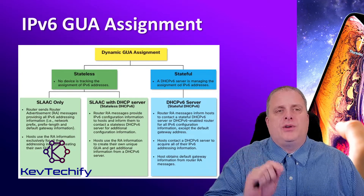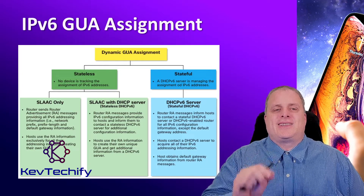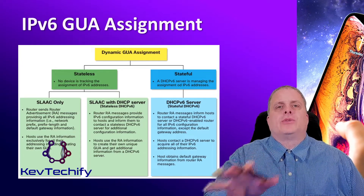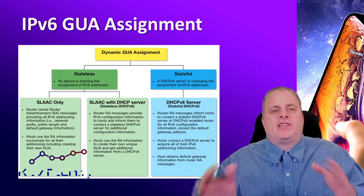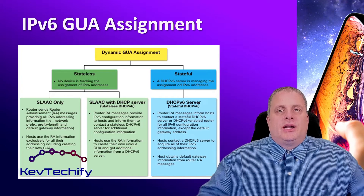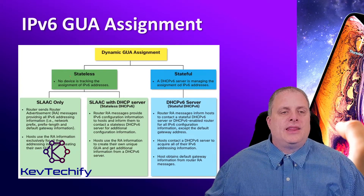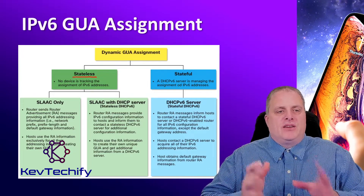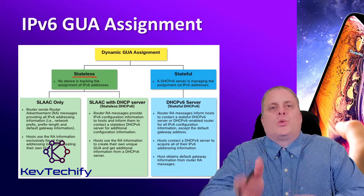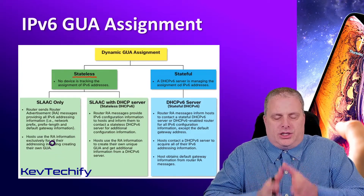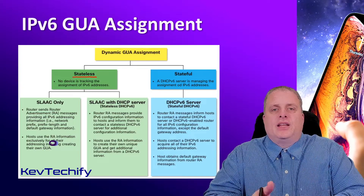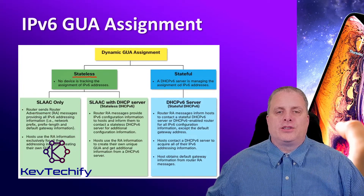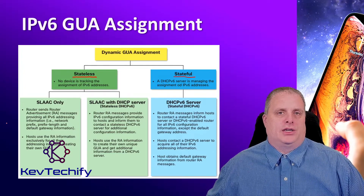When we look for the IPv6 global unicast address, there are a couple of ways we can do that. Typically it comes down to a stateful and a stateless assignment. Stateless is where nobody's keeping track of the address and the information and who gets what address. It's generated, it's assigned, and there's no record of it anywhere. Stateful is where there's a server actually keeping track of that information — somewhere there's a database that says this address is used.